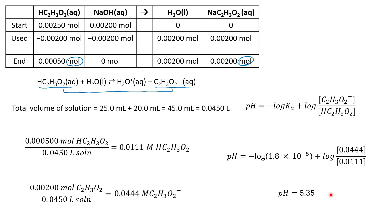This problem really highlights why I like using this stoichiometry table — I needed to know how much product was formed. You don't have to do it this way, but having everything in the table helps me recognize a buffer more easily than doing the straight-up stoichiometry alone.